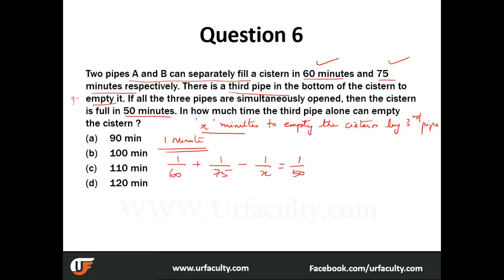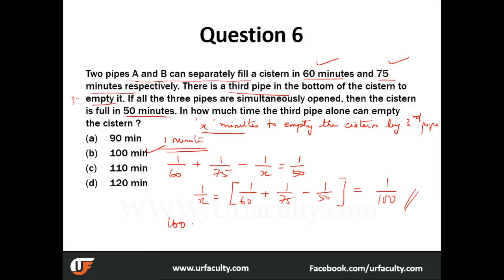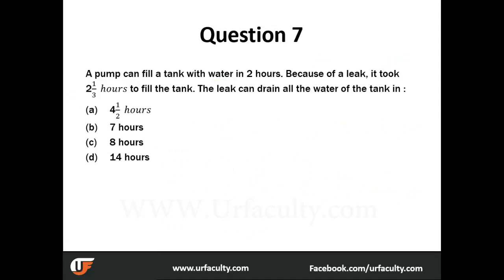It's very simple: 1/x = 1/60 + 1/75 − 1/50. You get the answer as 1/100, so it takes 100 minutes. That's the time for the third pipe alone to empty the cistern.